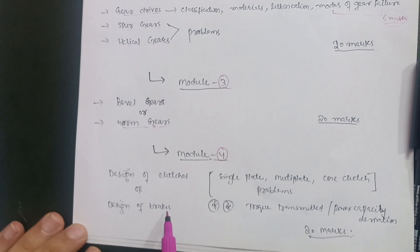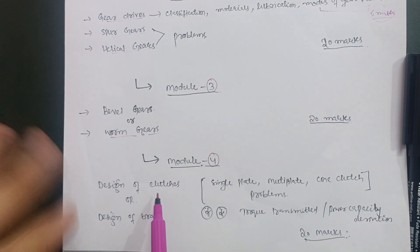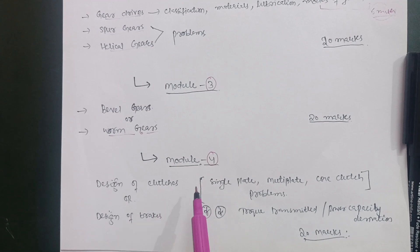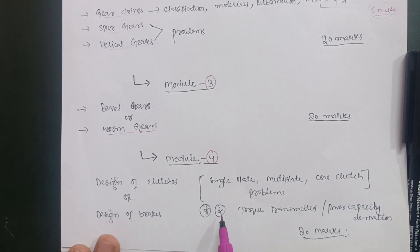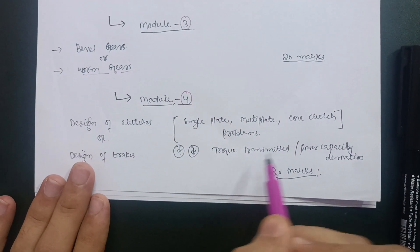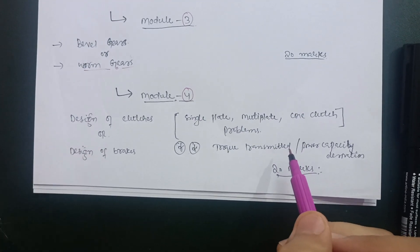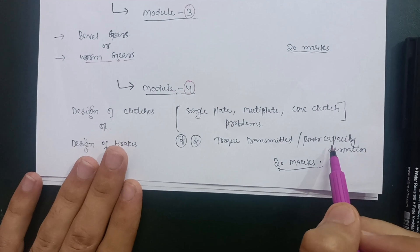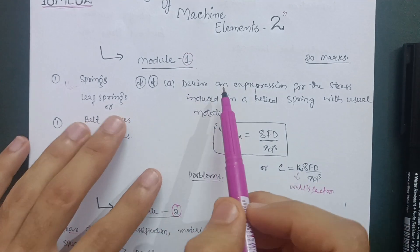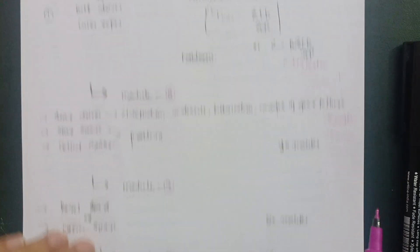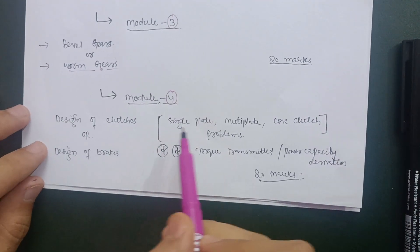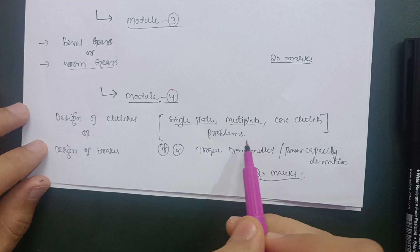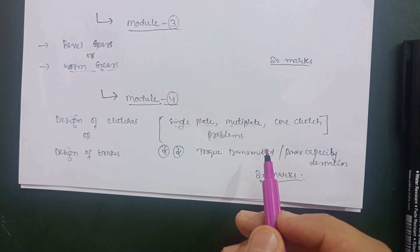Module 4 has two parts: design of clutches and design of brakes. I recommend going for design of clutches because the answers and procedure are less extensive. The most important question is a derivation: torque transmitted by a plate clutch with uniform pressure theory and uniform wear theory. This is a definite question. The other important derivation is from Module 1 — stress induced in a helical spring. These two derivations are most important.